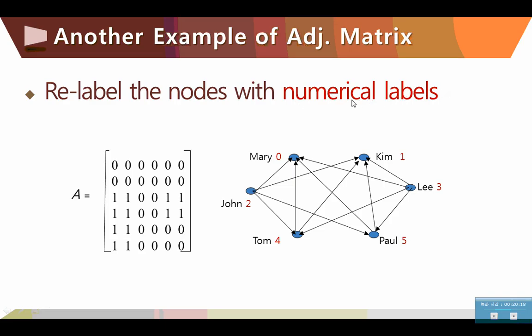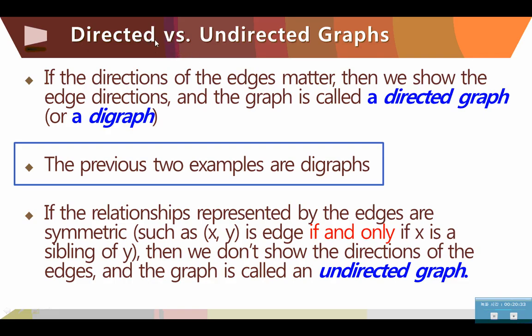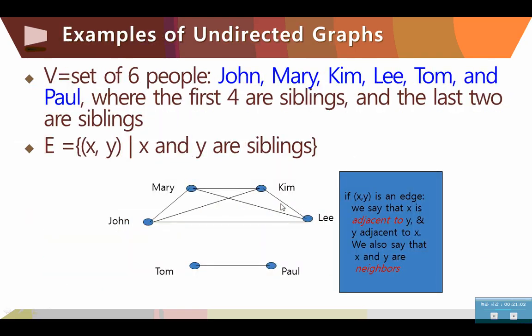So, this is an example, this is the matrix of this. And same here. From this relationship, we can find the adjacency matrix like this. From this matrix, we can draw the graph like this. So, vice versa. With numerical label, that means we start from the 0s. So, this node, this matrix, and this graph, this is the adjacency matrix of this graph. The comparison between directed and undirected graph. If the directions of the edges matter, then we show the edge directions, and the graph is called the directed graph, or digraph. The previous two examples are digraphs with the directions.